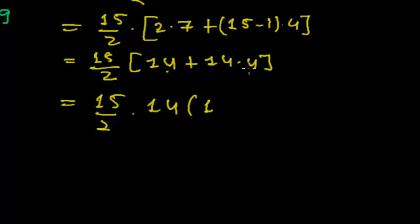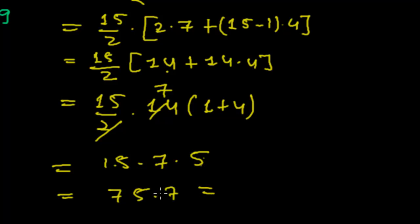Now it is 15 times 7 times 5. So 15 times 5 is 75 times 7. 5 times 7 is 35, carry over 3. 7 times 7 is 49, 49 plus 3 is 52. So we got the sum of the first 15 terms as 525 for the first case.